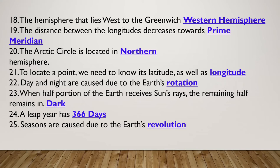Day and night are due to the rotation of the Earth. Rotation takes 24 hours. Revolution is the movement of the Earth around the sun, which takes 365 days.